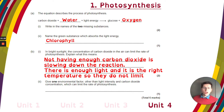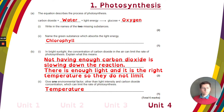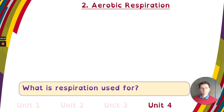Give one environmental factor other than light intensity and carbon dioxide concentration which can limit the rate of photosynthesis — well, we've got those two, so the last one has to be temperature. It's going to be one of those three. That's all we've got.